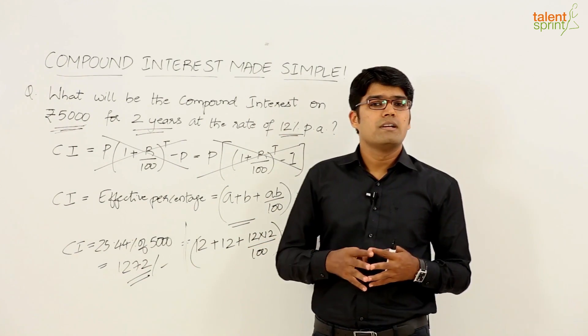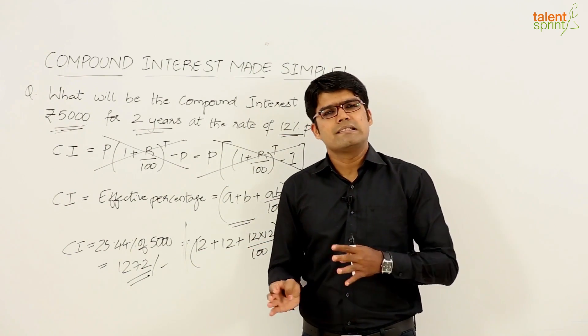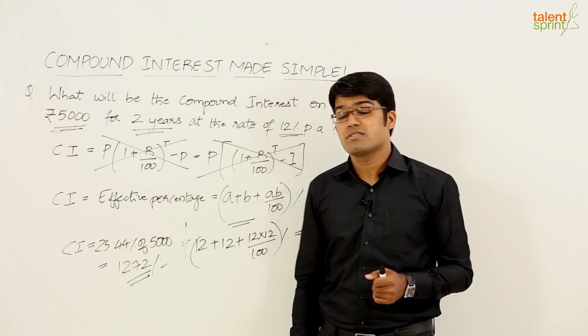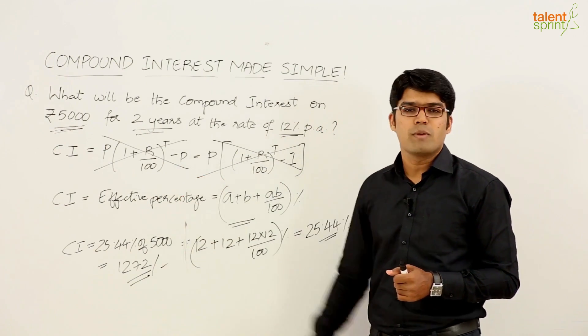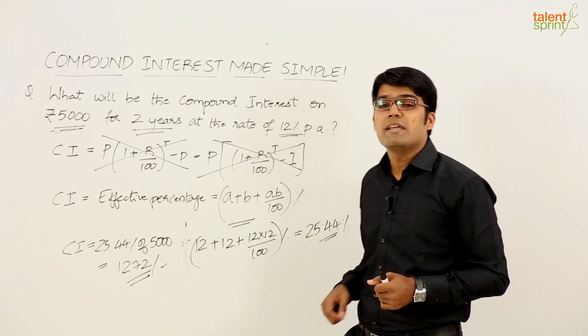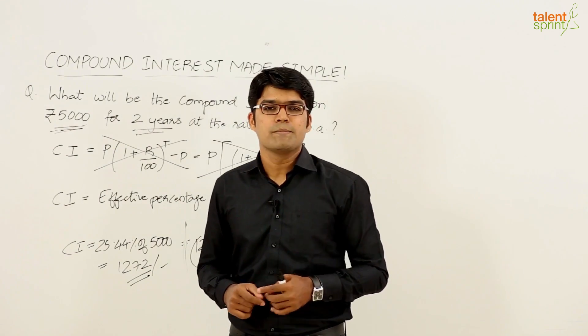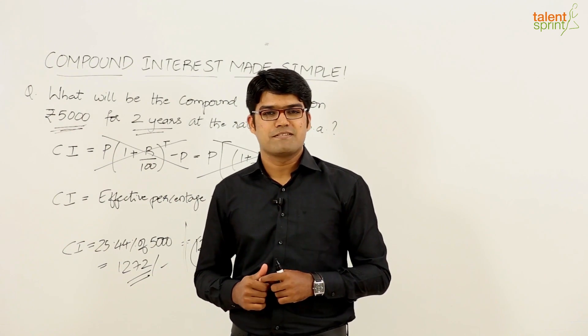Altogether, you will be able to solve a question on compound interest in 10 to 15 seconds which is otherwise not possible if you go by the formula. This is how you can make your compound interest calculations simple by using the concept of effective percentage.